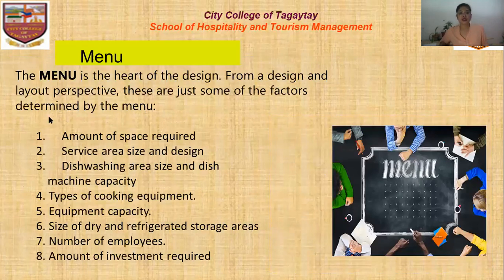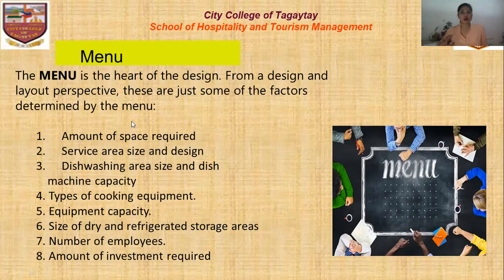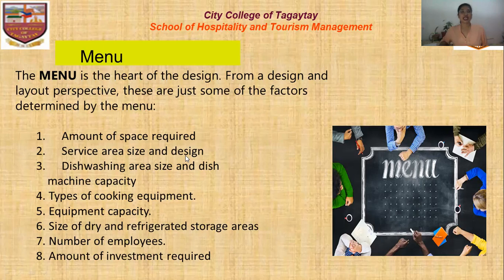Next is the menu. The menu is the heart of the design. From a design and layout perspective, factors determined by the menu include: the amount of space required, the service area size and design, the dishwashing area size and dish machine capacity, types of cooking equipment, equipment capacity, size of dry and refrigerated storage areas, as well as number of employees and amount of investment required. There are lots of considerations that must match the menu — you cannot create a concept without considering the menu first.